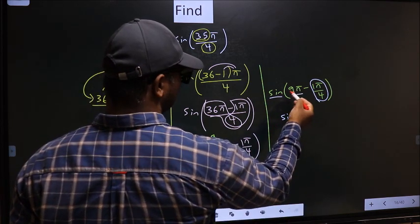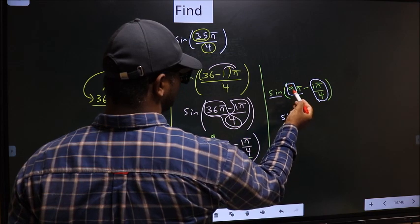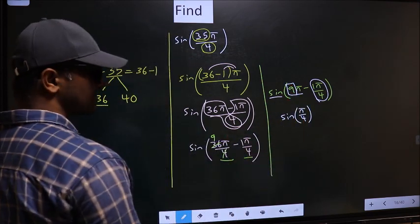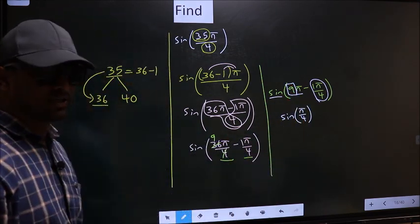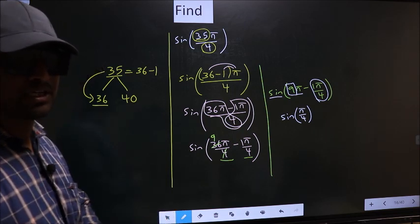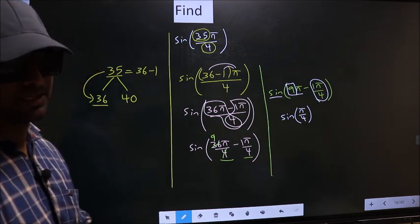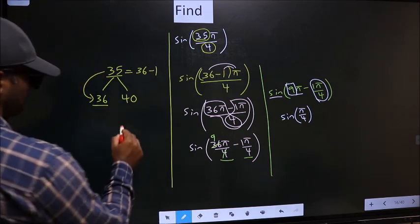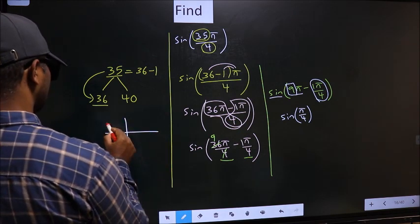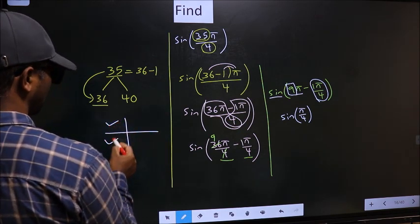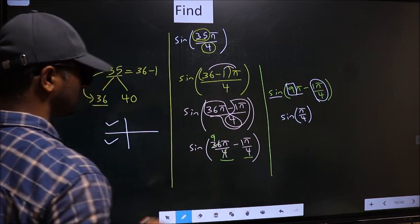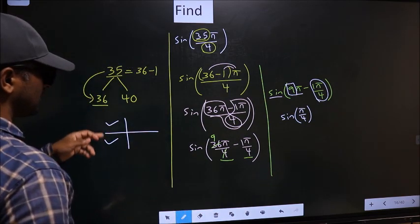To answer that, we should look at the number before π, which is 9. And 9 is odd. And all the odd multiples of π, they lie in the second or in the third quadrant.